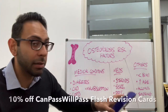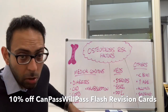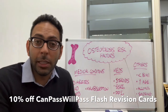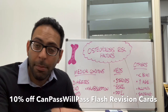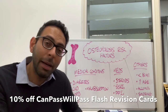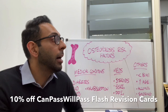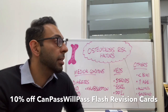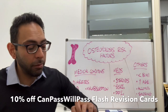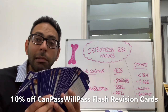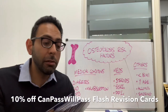The CanPass WillPass Flash revision cards — these are 150 cards that we post out to your house globally, and they can be used for multiple different exams. I know people use them for AKT, RCA, MSRA, PLAB 1, PLAB 2, and MRCP Part 1, as well as medical school. There are 150 high-yield focused teaching revision cards.